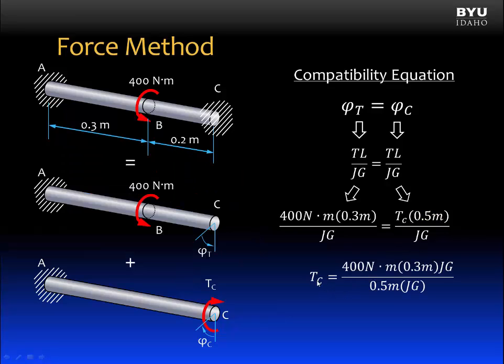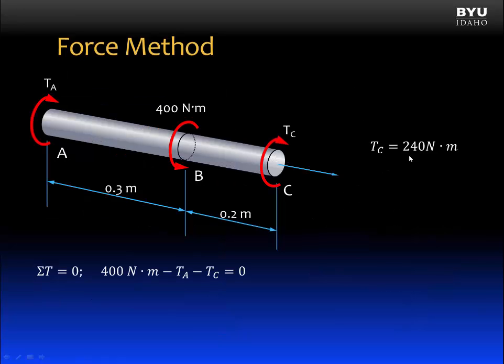Now we can solve for T sub C, and we get T sub C is equal to 240 newton meters. We can take that value that we solved for T sub C, plug it into our equation of static equilibrium, and solve for our remaining unknown T sub A, which is equal to 160 newton meters.